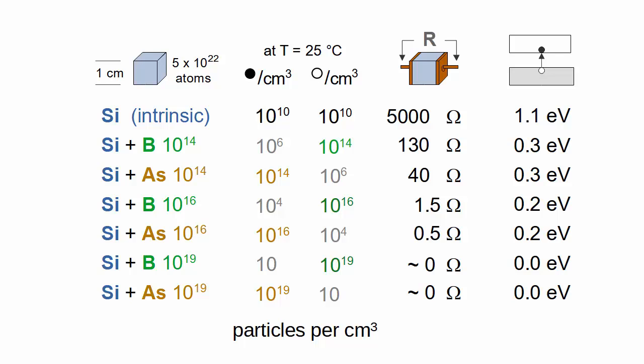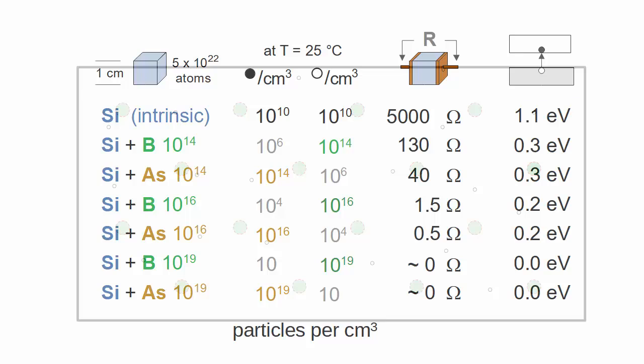Next, we'll look at silicon that contains both acceptors and donors. To make integrated circuits, engineers often start with a silicon wafer lightly doped with boron.